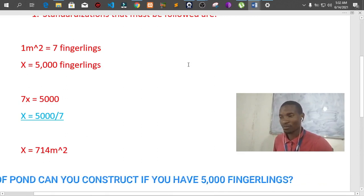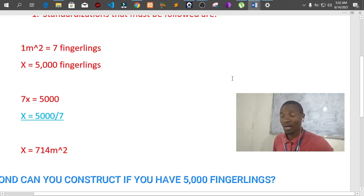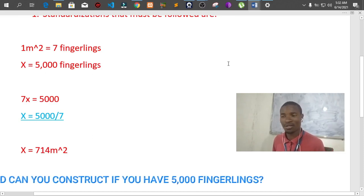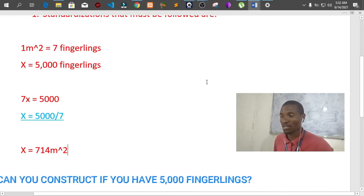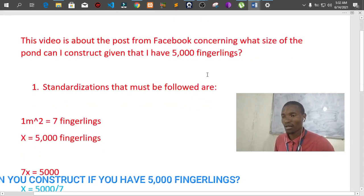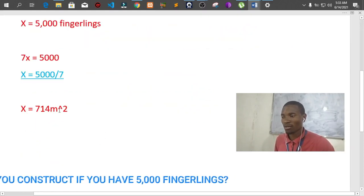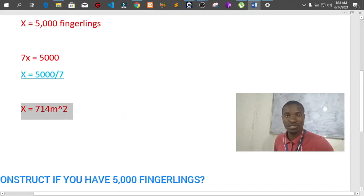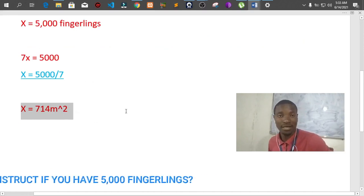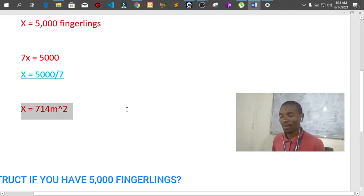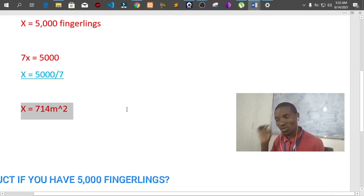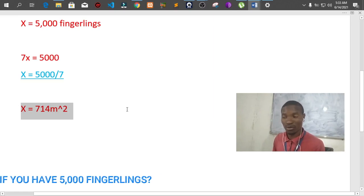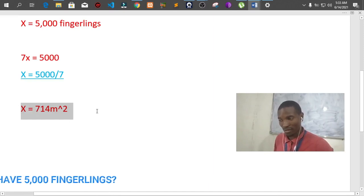Given that he or she had 5,000 fingerlings, that's a simple calculation that you can perform. You can go on and start constructing a pond that is 714 meters square capacity. But normally, this is not the volume but this is just the area. So the area of the pond should have 714 meters square.